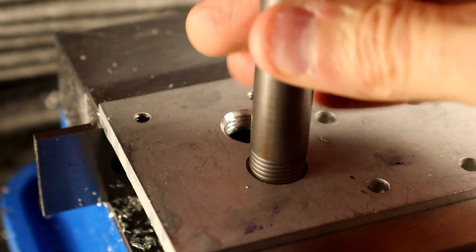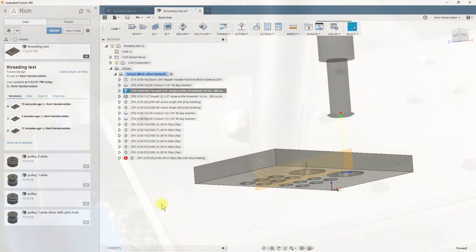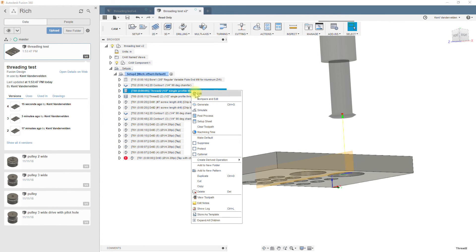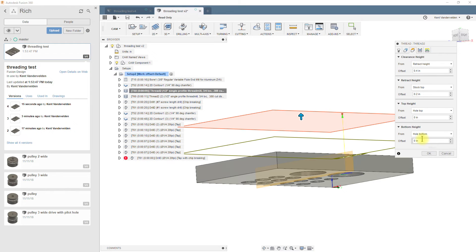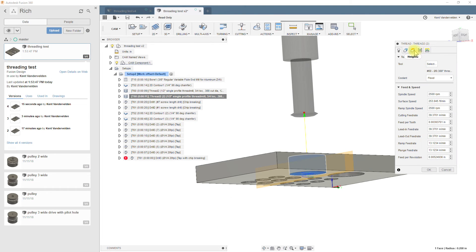This hole didn't get threaded quite all the way through because Fusion 360 is looking at the tool length and bringing the bottom of that tool to the bottom of the hole. For this through hole, we need to add a slight amount of breakout and that can be parameterized by the tool pitch.